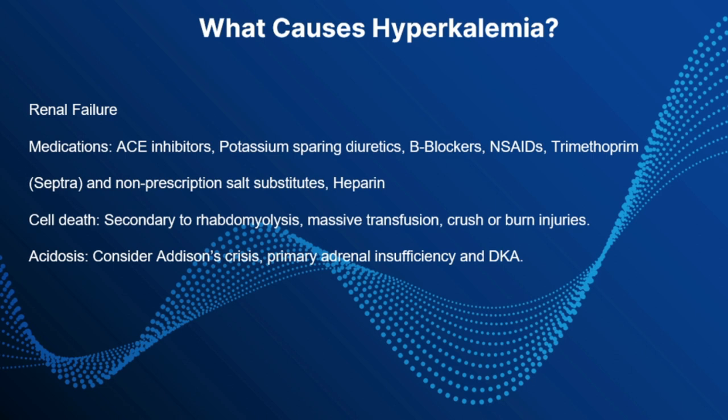Hyperkalemia can also occur due to cell death — secondary to rhabdo, massive transfusions, crush or burn injuries. Hyperkalemia loves a very acidotic environment, which is why it will be one of your first killers in DKA patients. It can also occur in sepsis and dehydration because these cause hypotension, decreased tissue perfusion, and metabolic acidosis with subsequent potassium elevation.